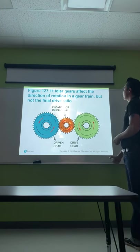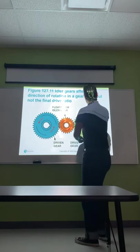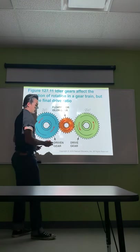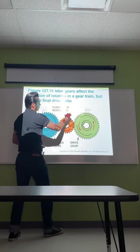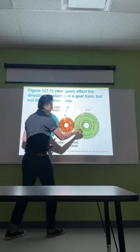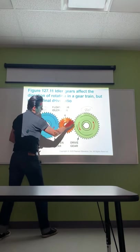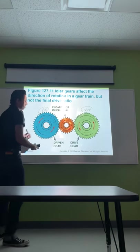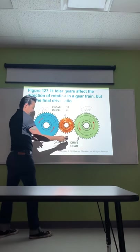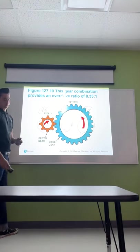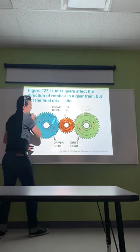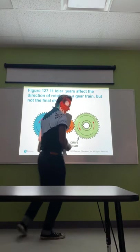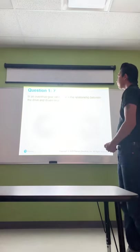Idler gears affect the direction of rotation in a gear train but not the final drive ratio. For example, if you have 20 teeth on the drive gear and 20 teeth on the driven gear, it doesn't matter how many teeth the center idler gear has. The idler just changes the rotation direction — this one rotates counterclockwise, the idler goes clockwise, and sends power back so the driven gear goes in the same direction as the drive gear. If they were meshed directly, they'd spin in opposite directions. We use this design to achieve reverse gear — the idler gear helps us gain reverse rotation.